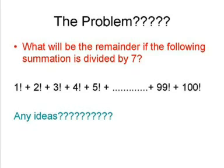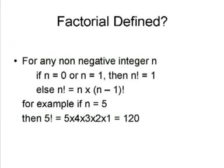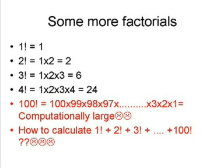A factorial is defined like this: For any non-negative integer n, if n = 0 or n = 1, then n! = 1. Otherwise, n! = n × (n-1)!. For example, if n = 5, then 5! = 5 × 4 × 3 × 2 × 1 = 120.